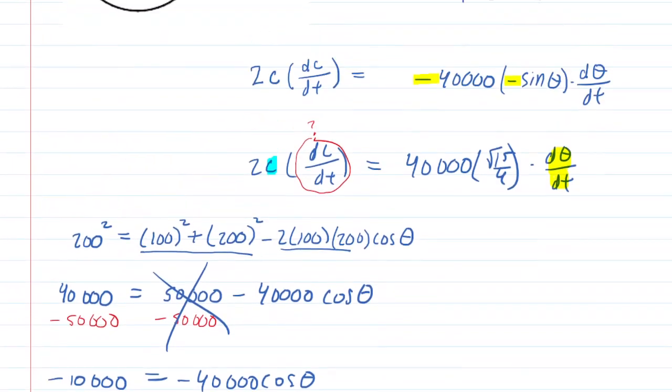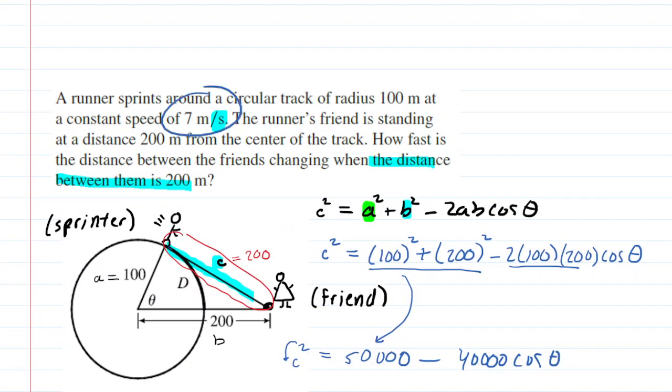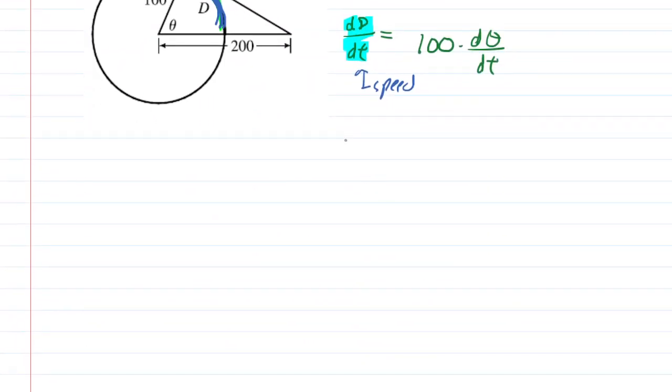And the speed of the runner was given to us. If we go back up, we know the speed was that 7 meters per second. So we're going to actually plug in 7 for that speed. And then this is neat because this is going to allow us to find that d theta dt.